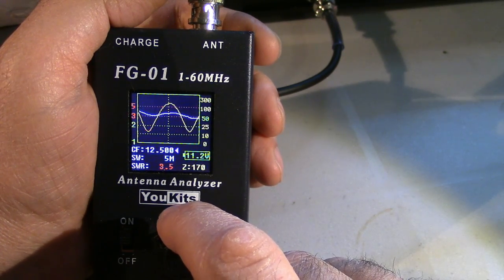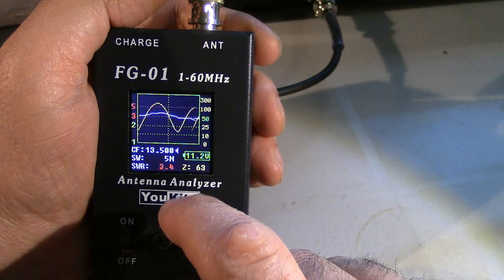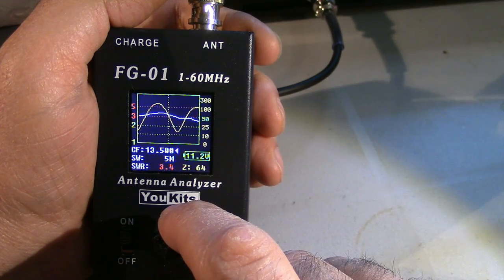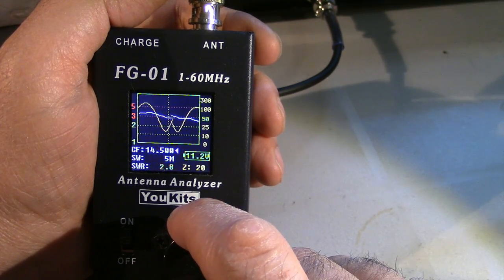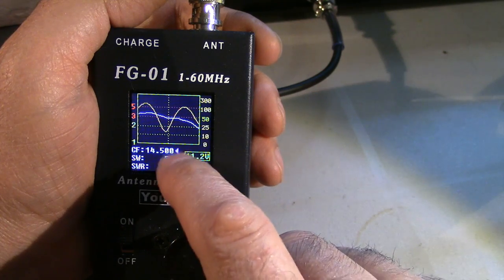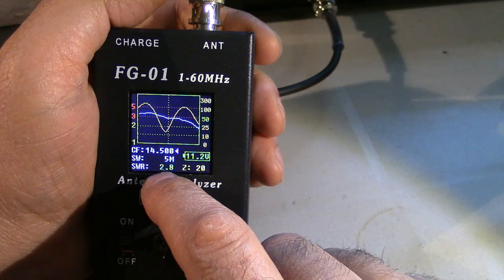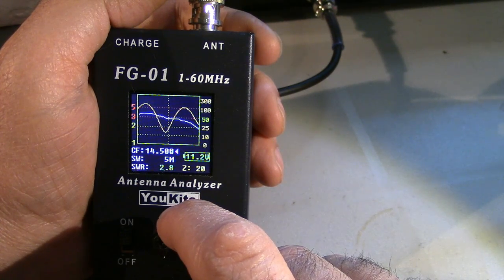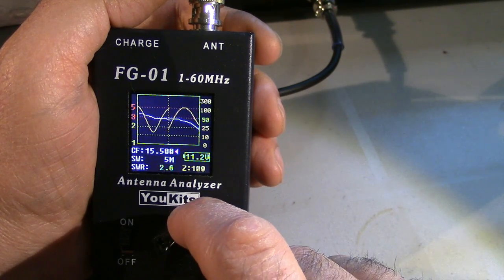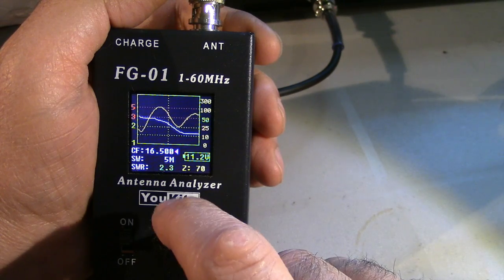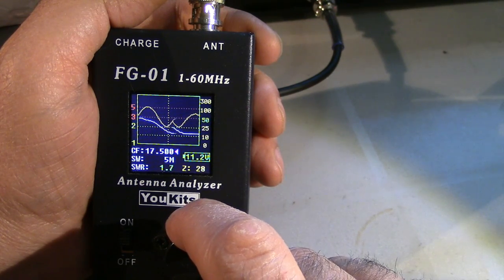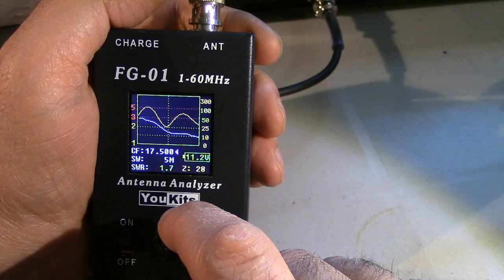Of course you have to use a tuner with these antennas along with the balun. So we're approaching 14 megahertz now. Impedance 20 ohms, SWR 2.8. So again you're going to be using a tuner but the antenna seems to...